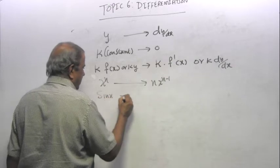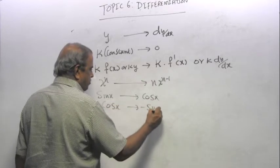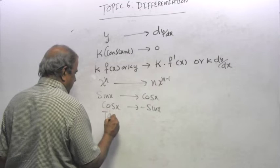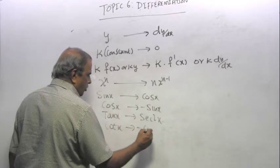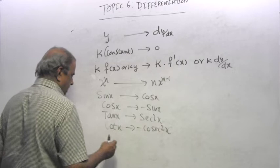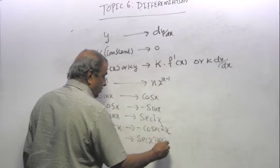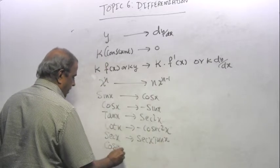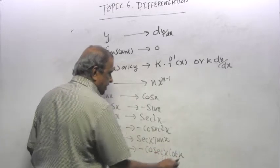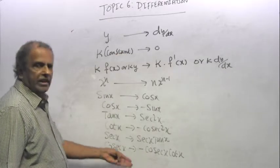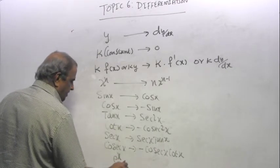Then sin X gives you cos X. Cos X gives you minus sin X. Tan X gives you sec squared X. I will show you how to prove this. Cot X gives you minus cosec squared X. And then sec X gives you sec X tan X. Remember all these are in radians. And cosec X gives you minus cosec X cot X. Later on when we do integration, I will show you how you can exploit these to do questions in integration. And these are the things which I need to prove this.